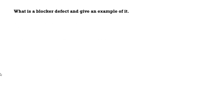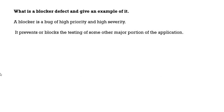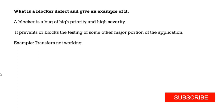The next question is: what is a blocker defect? A blocker is a bug of high priority and high severity — it prevents or blocks the testing of some other major portion of the application. For example, in an application like PhonePe or Google Pay, if you are not able to perform a transaction at all, it is blocking the business — that is a blocker defect. If found in lower environments, it will also be a blocker defect. It is of high priority and high severity. This is all for part 7. Thank you for watching.